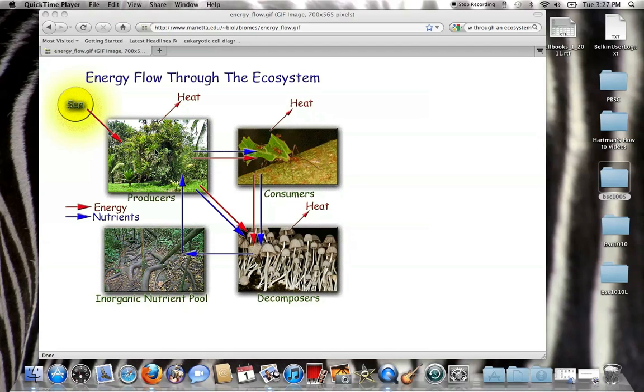Our producers are the photosynthetic organisms that take the nutrients that are in the soil and they produce energy or food for consumers. Consumers are organisms that cannot make their own food. They need to eat the producers or they need to eat other consumers.